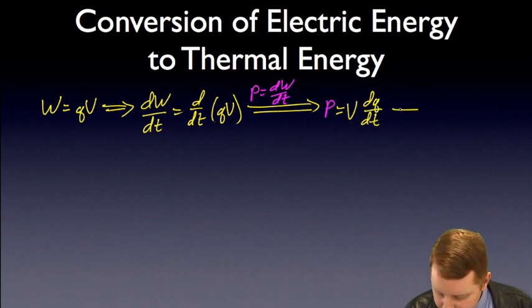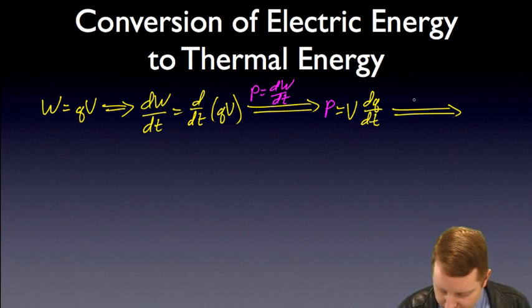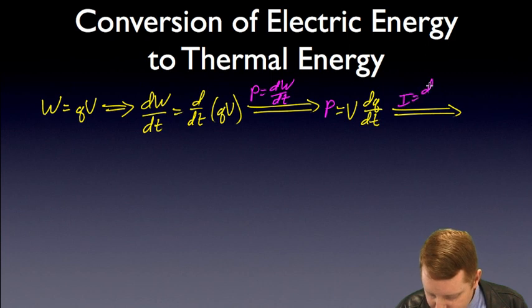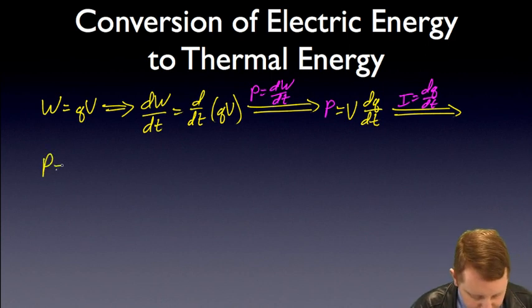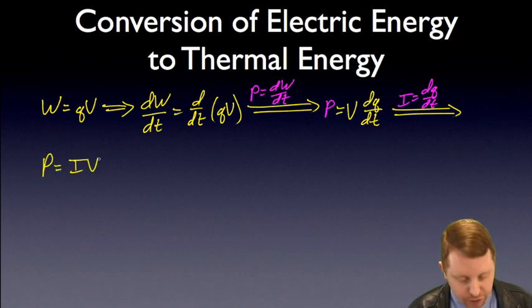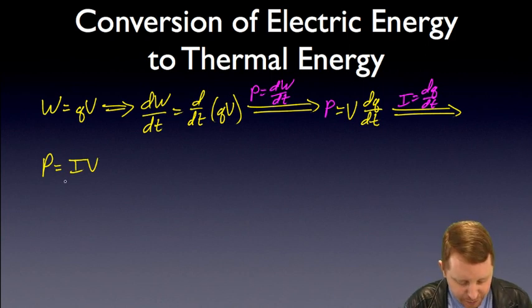But, if you recall, the rate of change, the rate at which charge passes an area, the rate of change of charge, is going to be current flow. I equals dQ dt. So, we could rewrite this, then, as power is equal to current times voltage. Great, that's going to be very useful.